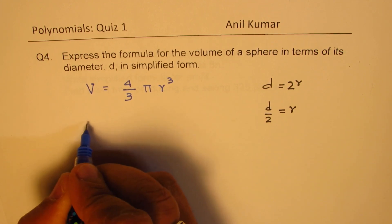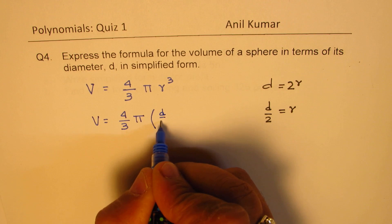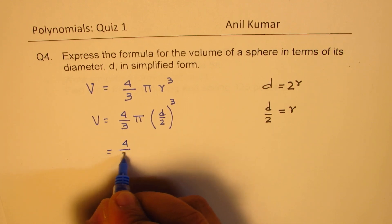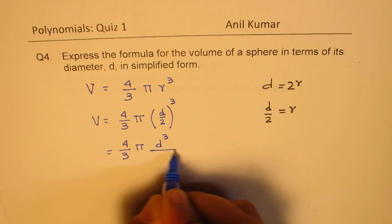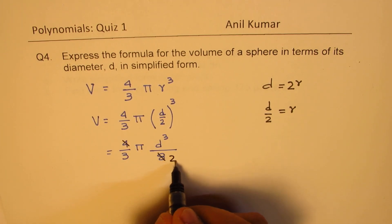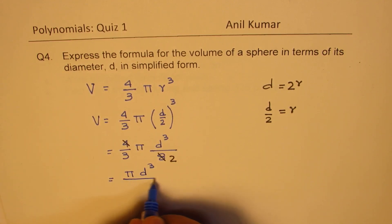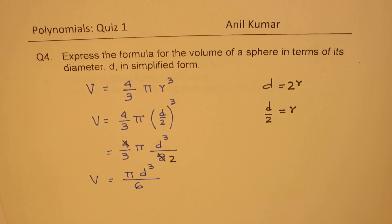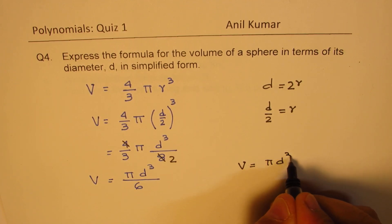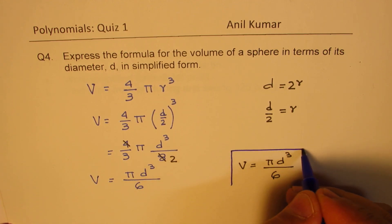Then we get volume = (4/3)π × (d/2)³. We can open this bracket: (4/3)π × d³/8. Now, 4 divided by 8 gives 2 in the denominator, and we can write this as πd³/6. So that becomes the volume expressed in terms of diameter: V = πd³/6.